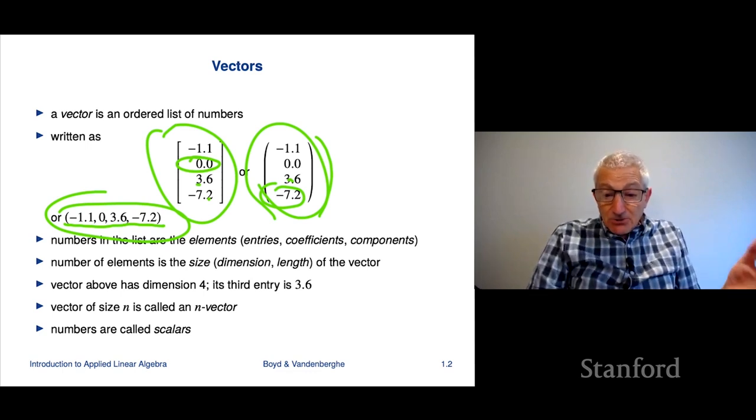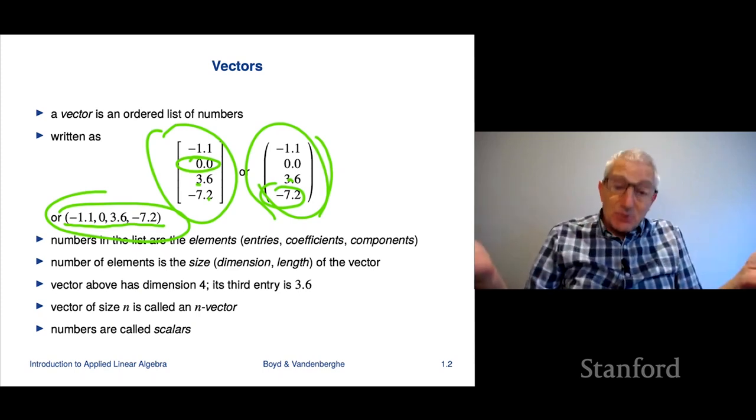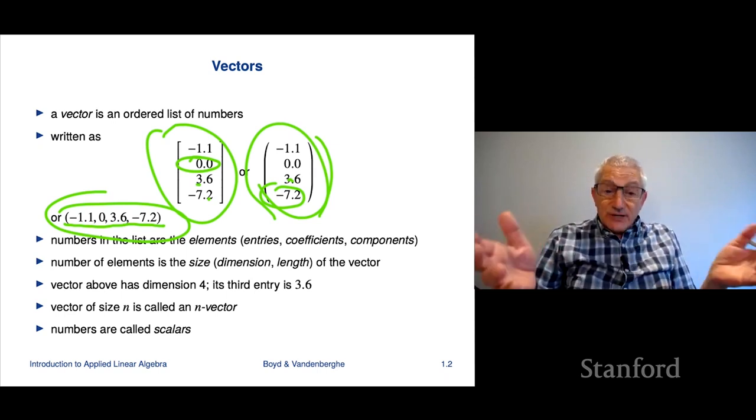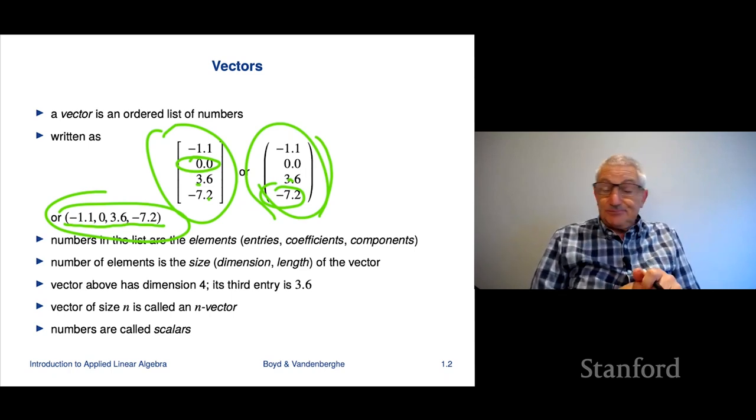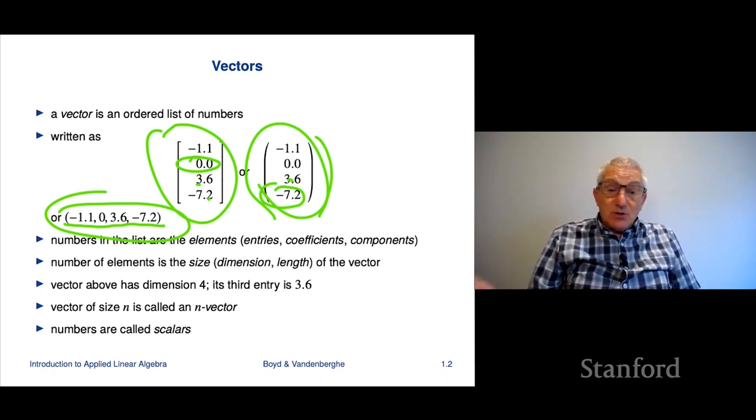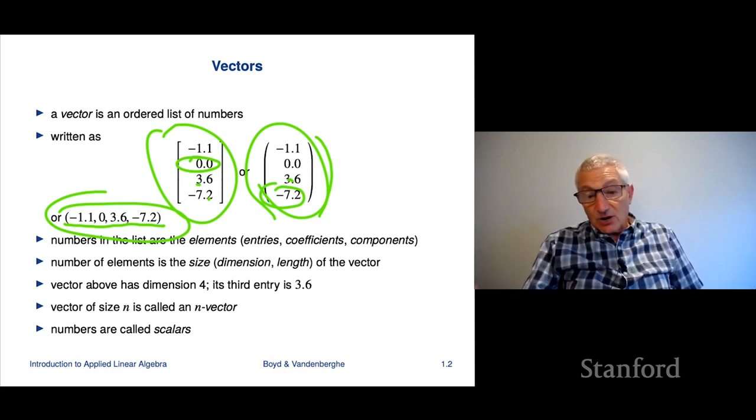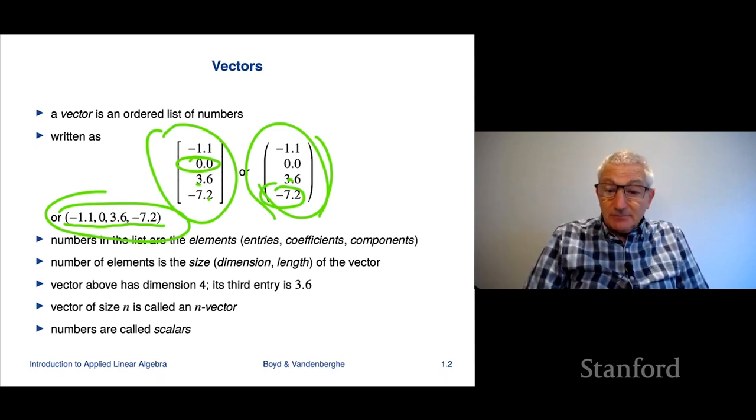I should say that the numbers inside are called scalars. I mean, they're just numbers, right? But they're called scalars. For us, the scalars are gonna be real numbers like minus 1.1, or pi, or 3.267. It is possible and there are applications where the entries are, for example, complex numbers. We won't encounter those, but it's not hard to extend what we do to the case where the entries are complex numbers.